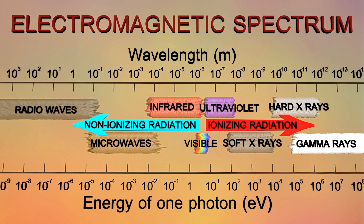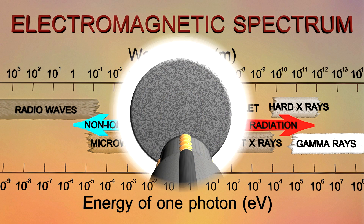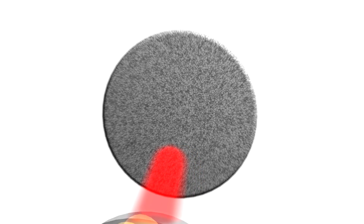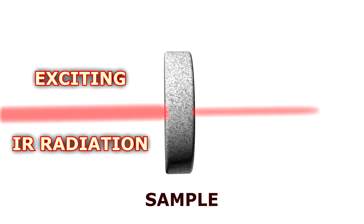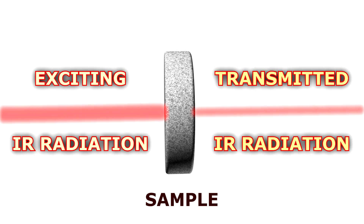In infrared spectroscopy, a sample is irradiated with polychromatic infrared electromagnetic radiation. As a result, some of this radiation is absorbed by the material, and by studying the spectrum of the transmitted radiation, it is possible to obtain information about the substrate that we want to study.